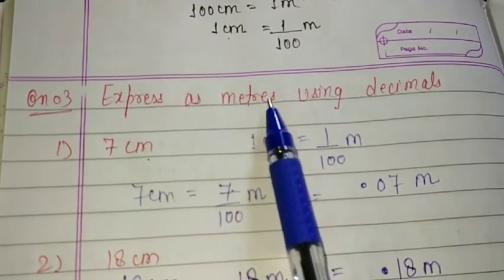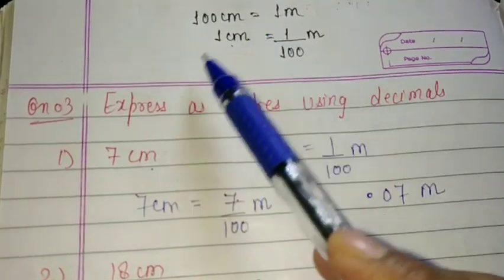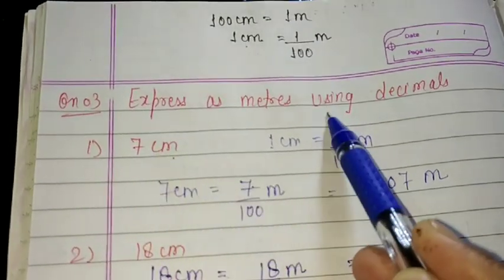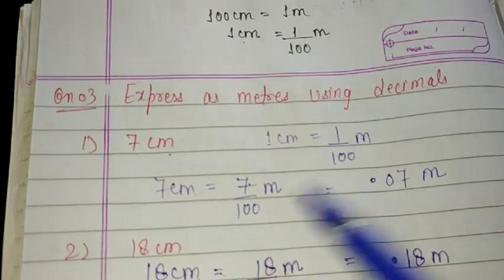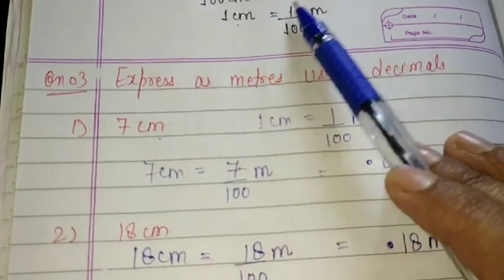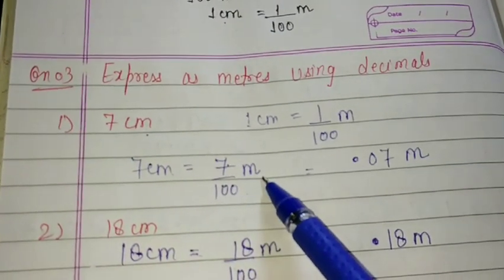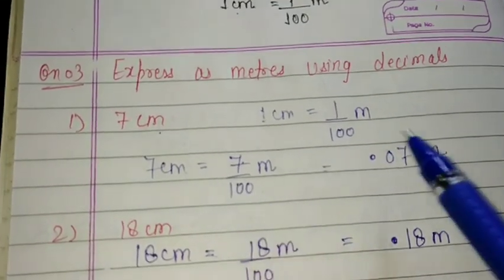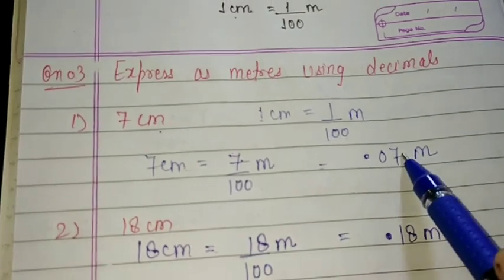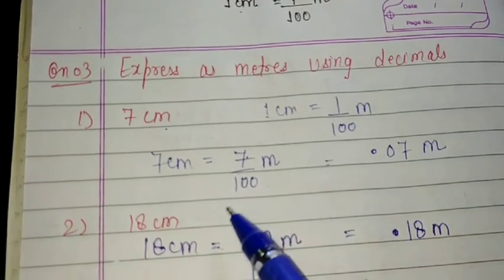Question number 3: express as meter using decimals. We have terms in centimeters and we have to convert centimeter into meter. We know that 1 centimeter is equal to 1 over 100 meter. So if we have to convert centimeter into meter, we divide that particular term with 100. When we are changing millimeter into centimeter, we divide by 10, but here 1 centimeter is equal to 1 over 100 meter, so we divide by 100. So 7 centimeters is equal to 7 over 100 meter. Downside 2 zeros are there, so upside we make 2 digits — 7, then I put 1 zero — and before 2 digits I put the point.